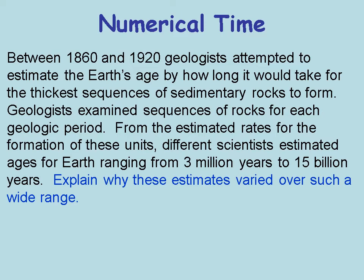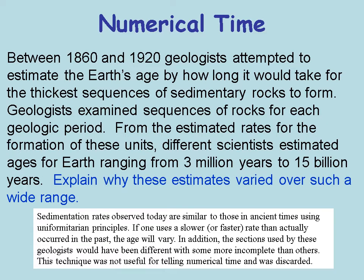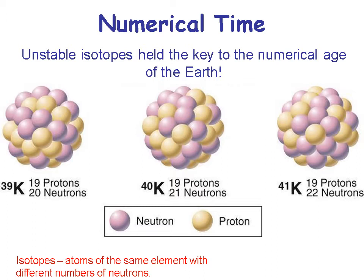Between 1860 and 1920, geologists attempted to estimate Earth's age by how long it would take for the thickest sequences of sedimentary rocks to form. They examined sequences from each geologic period and estimated rates for formation, yielding widely different ages from 3 million to 15 billion years. It didn't work because even though sedimentation rates are similar today as in the past, using a slightly different rate than actually occurred changes the age. In addition, the sections used by geologists varied — some were incomplete — so there was just too much variation, making it not a good tool.